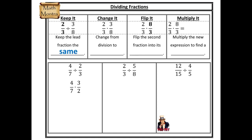Keep it — I'm going to keep the lead fraction the same. So in this case, two thirds divided by three eighths: two thirds stays exactly the same. Change it — I'm going to change from division to multiplication, so that operation in the middle went from division to multiplication. Now I have two thirds times three eighths. Flip it — flip the second fraction into its reciprocal. Three and eight are going to switch positions, so we went from three eighths to eight thirds. Now multiply it: two times eight gives me 16, three times three gives me nine, and I get 16 ninths. I could simplify that down to a mixed number.